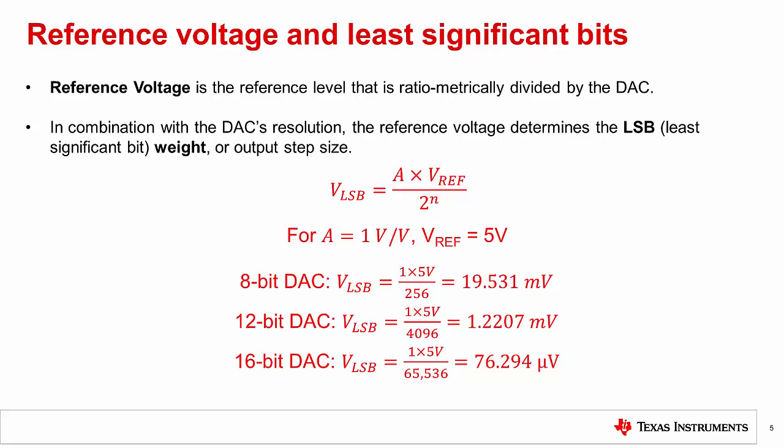The VLSB can be calculated by multiplying the gain of the output buffer times the reference divided by 2 to the N, where N is the resolution of the DAC. For a DAC that has a gain of 1 volt for volt and a V reference of 5 volts, we can say that the 8-bit LSB size is 1 times 5 volts divided by 256, or about 20 millivolts. For a 16-bit DAC, the VLSB is about 75 microvolts.